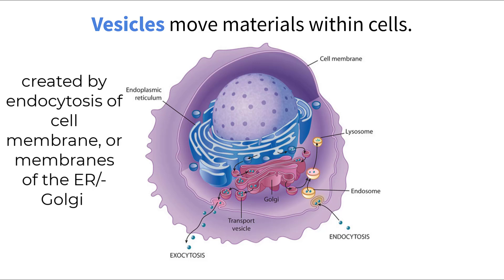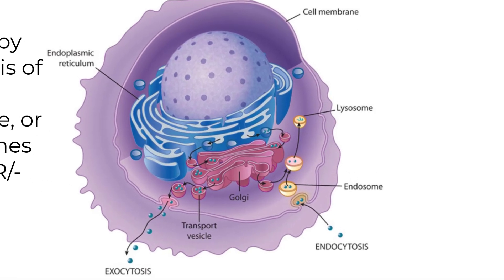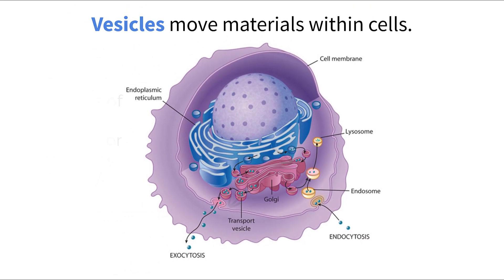This is the primary source of how material can be packaged and moved around within the cell. Looking at the image, we can see an important pathway here where substances are created in the ER, moved via a vesicle to the Golgi, and repackaged at the Golgi to be moved to another location like the cell's exterior. The opportunities for movement are endless.